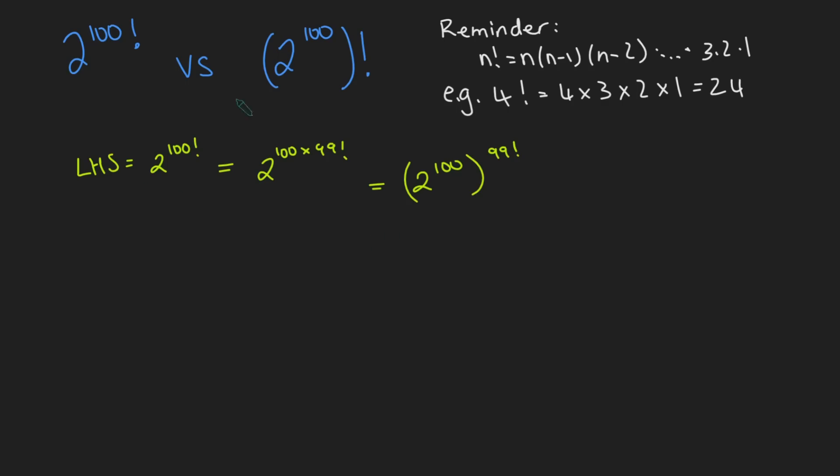Let's now have a look at our right-hand side here. So the right-hand side is 2 to the 100 factorial, which is the same as 2 to the 100 times 2 to the 100 minus 1 times 2 to the 100 minus 2 and so on, all the way down to 3 times 2 times 1.